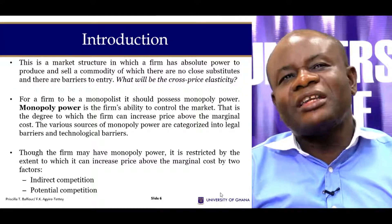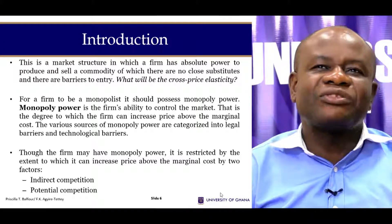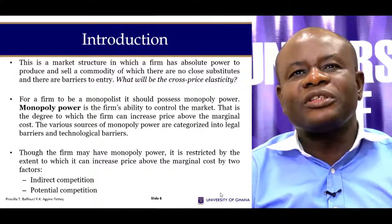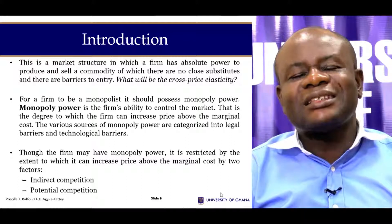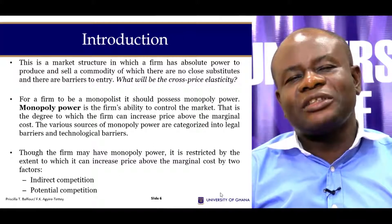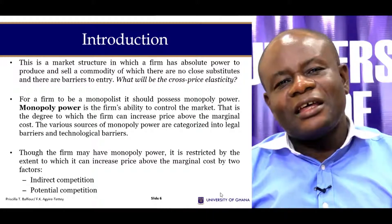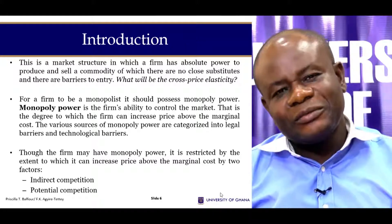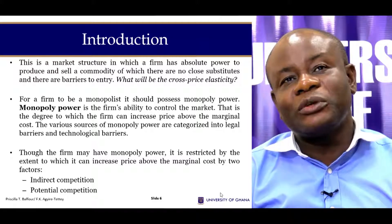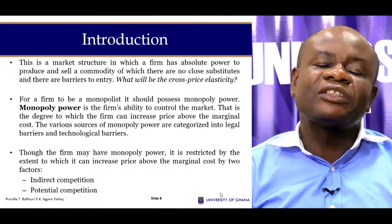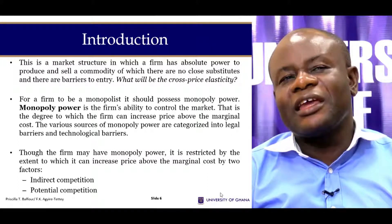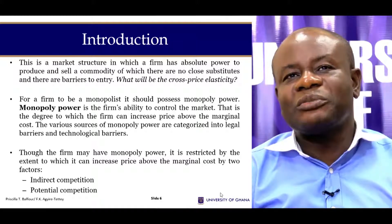A monopoly is a market structure in which the firm has absolute power to produce and supply a commodity for which there are no close substitutes. There is a single seller — the firm is the sole producer and seller of that commodity. For example, in Ghana, the Electricity Company of Ghana (ECG) comes close to being a monopolist, as it is the primary supplier of electricity, even though there are other small suppliers.